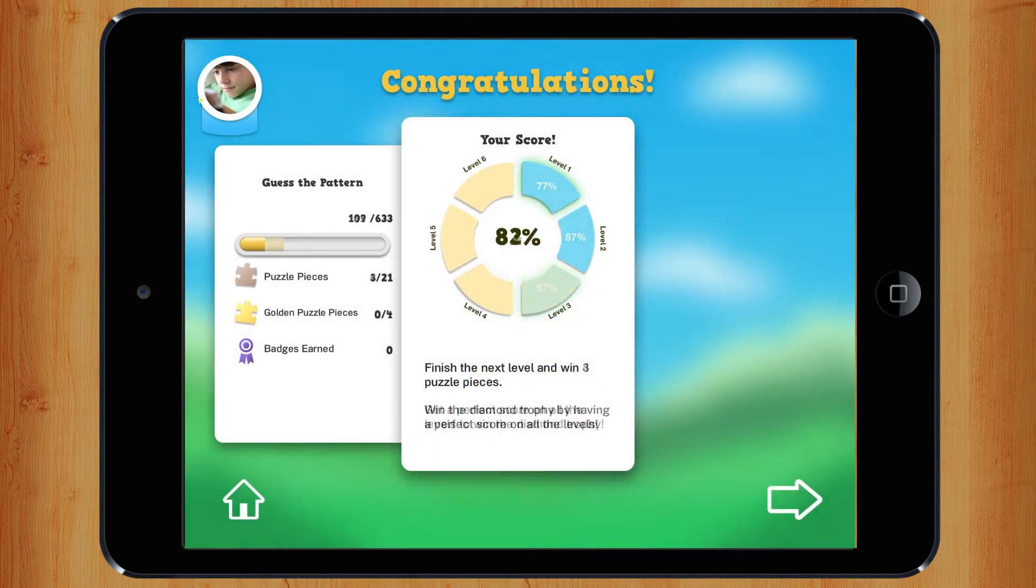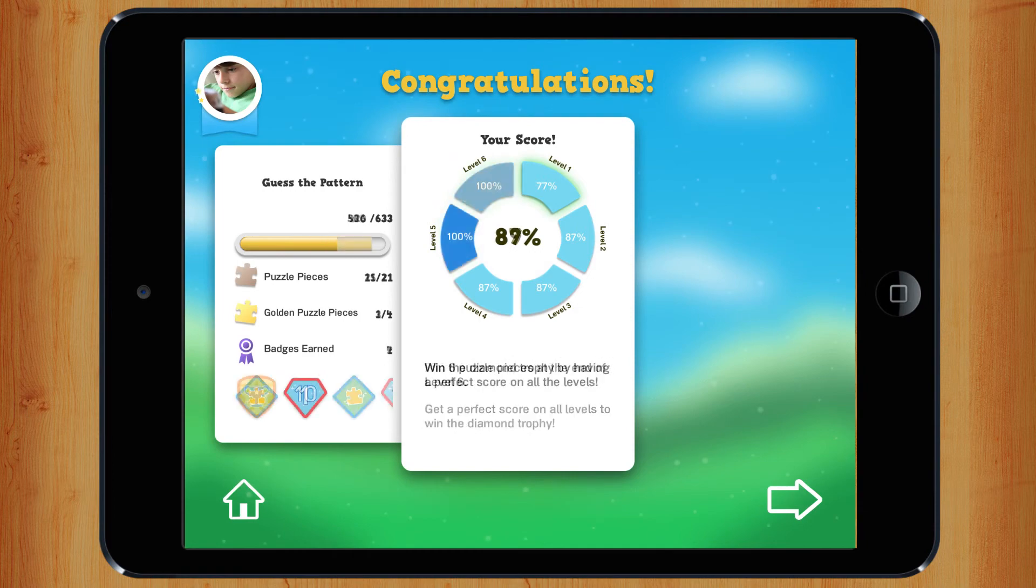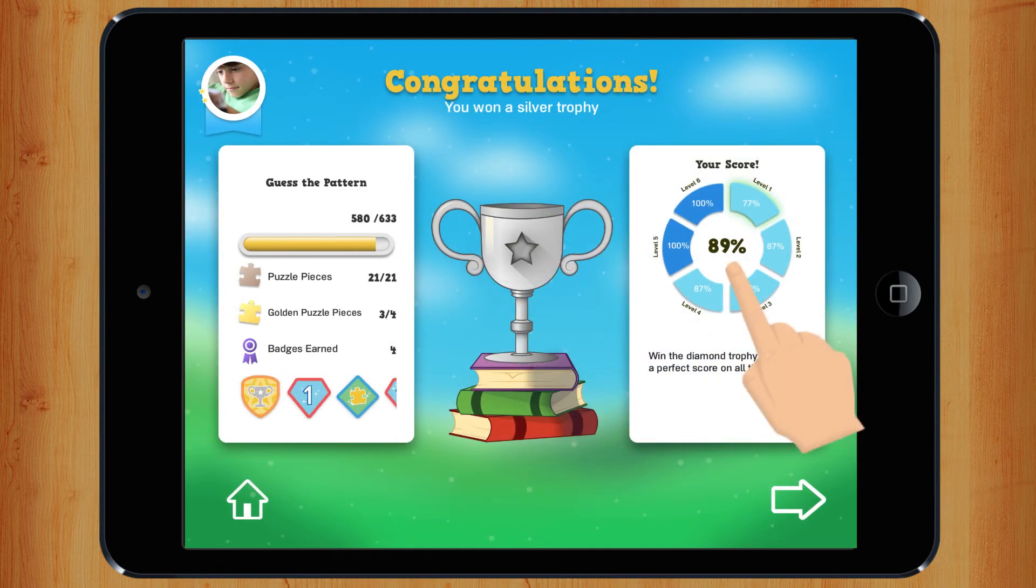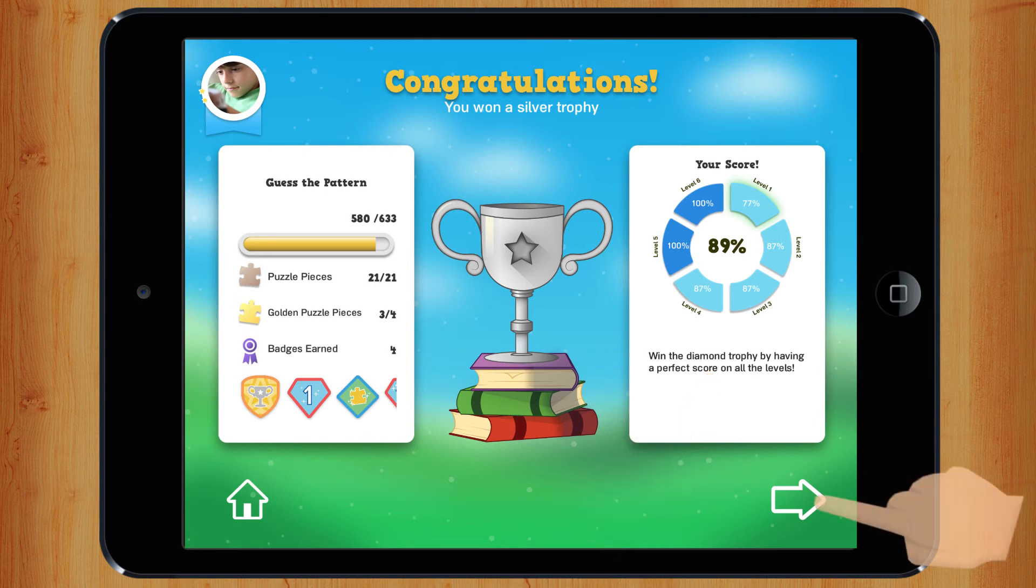At the end of each level, you can see your progress. Here is the percentage of questions that you answered correctly. The text encourages you to start a new level, or to redo one to improve your score and understanding. To start the next level, tap on the arrow.